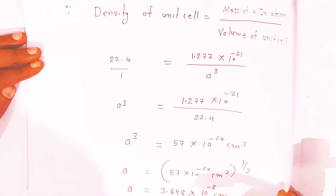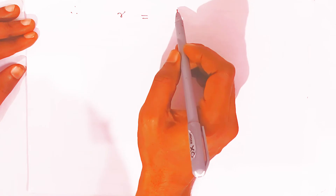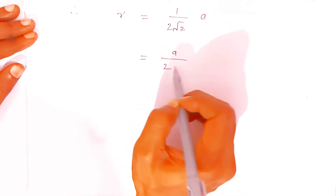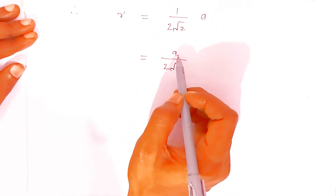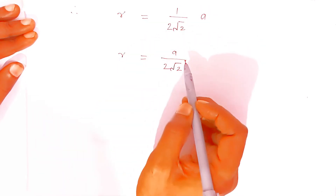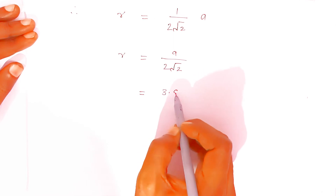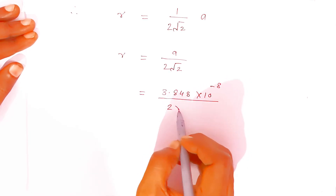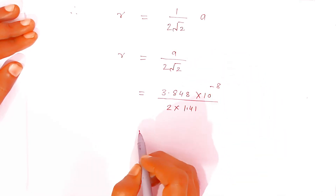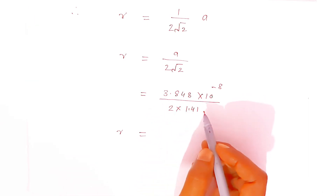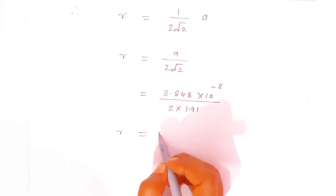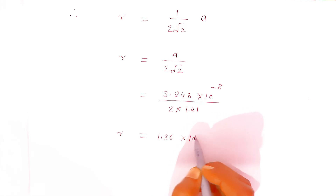Once you have calculated the side of the cube, you can easily find the radius. Radius = a / (2√2) = 3.848 × 10⁻⁸ / (2 × 1.41). Using the log table, when you divide this, you get 1.36 × 10⁻⁸ cm. This is the radius of the iridium atom in centimeters.